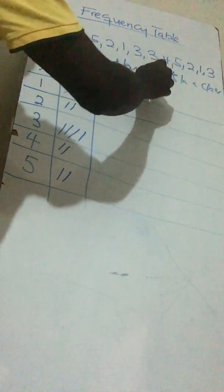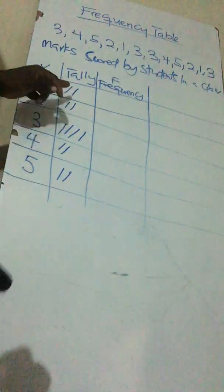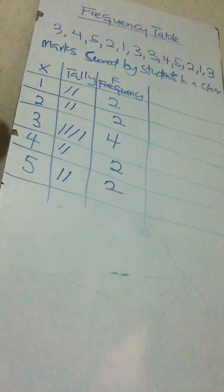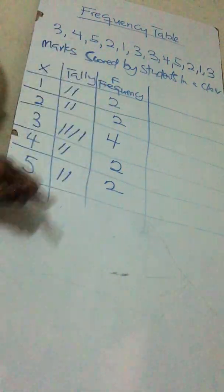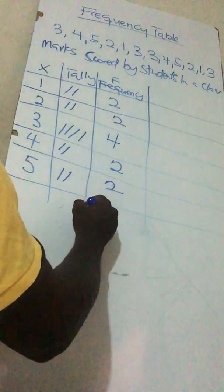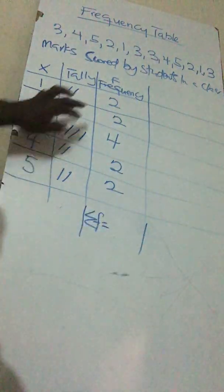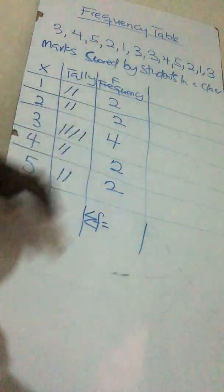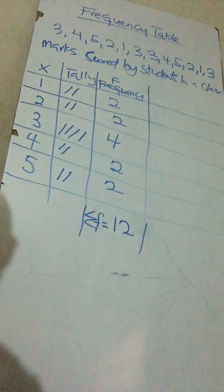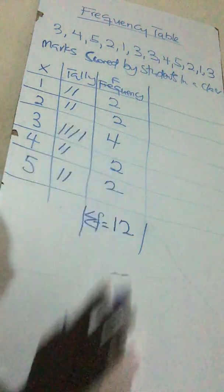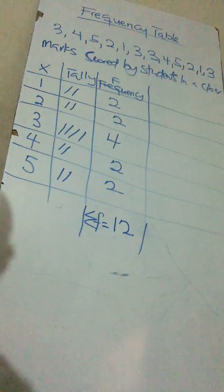Now let's get our frequency f from the tally. We have: 1 appears 2 times, 2 appears 2 times, 3 appears 4 times, 4 appears 2 times, and 5 appears 2 times. Now we add all the frequencies — sigma f equals 2 plus 2 plus 4 plus 2 plus 2, which is 12. So our total frequency is 12.